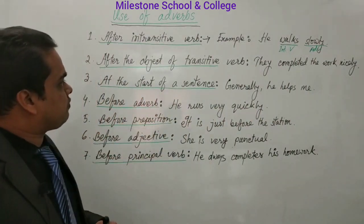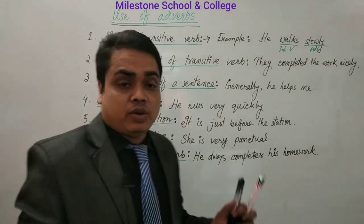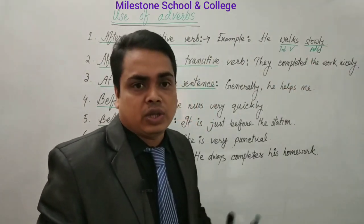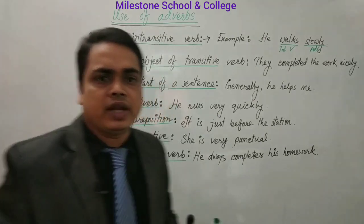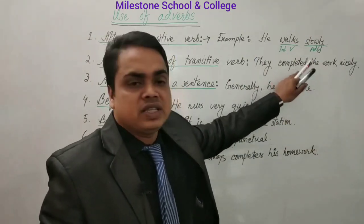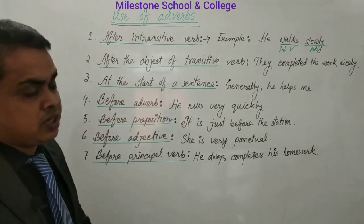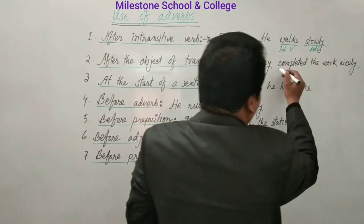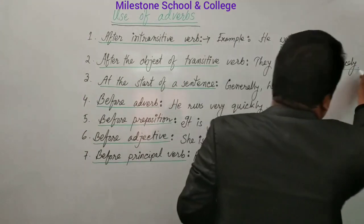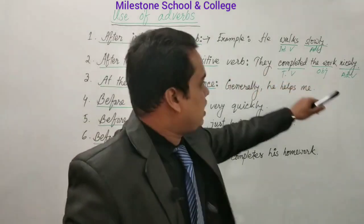Second: after the object of transitive verb. A transitive verb always takes an object. Example: 'They completed the work quickly.' If you make a question with 'what' or 'who' you will get an answer — 'completed what? The work.' So 'completed' is a transitive verb. After the object of the transitive verb, we are getting the adverb.